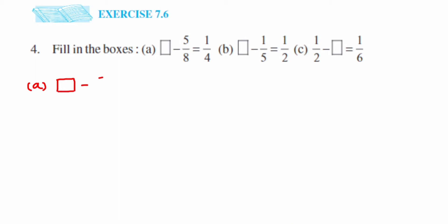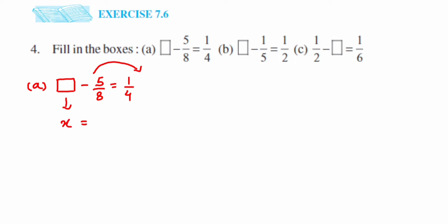So I can write: box minus 5 upon 8 is equal to 1 upon 4. To solve this, you can take a variable or just keep it a blank. I'm going to leave a blank. Since I want to find the blank, I want to transpose minus 5 upon 8 to the other side — whenever you do a transpose, the signs change. So I'll take it as x: 1 upon 4, and minus will become plus, so it will be plus 5 upon 8.